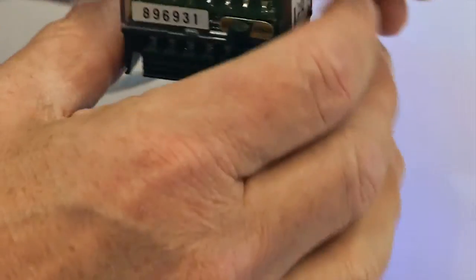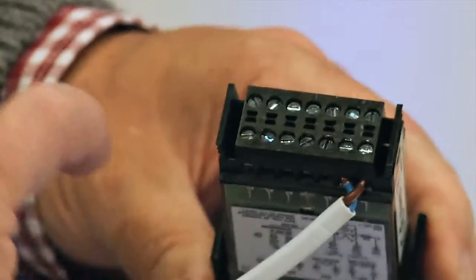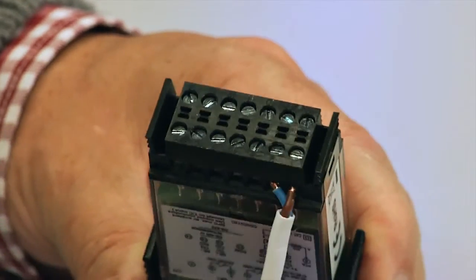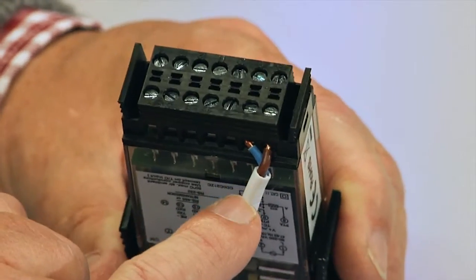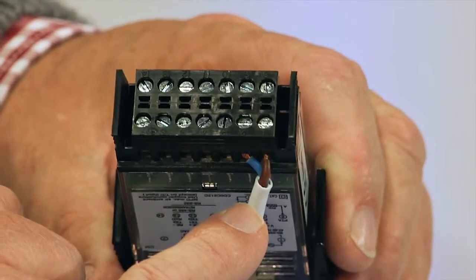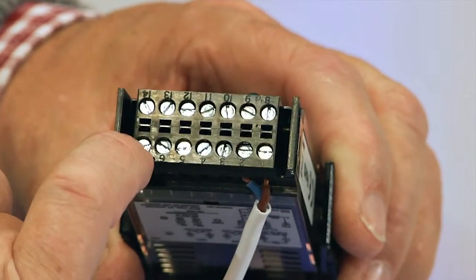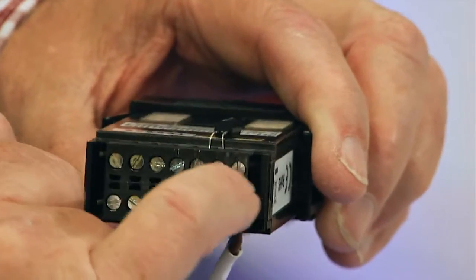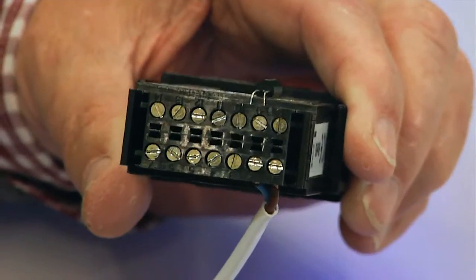And when we look at the back, there is the connection row. Here we have the connection for 220 volts alternating current. With this, it is connected, and many other things. For example, up here I have analog inputs, outputs.